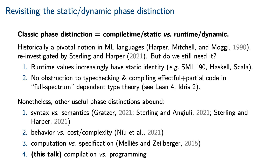On the other hand, we have found that other useful phase distinctions abound. For instance, logical relations and parametricity arguments evince a phase distinction between syntax and semantics. This observation lies at the heart of the recent proof of normalization for cubical type theory by myself and Carlo and Julie, and the recent proof of normalization for multimodal type theory by Gretzer. Bob Harper and I have also used this observation to give the most succinct proofs of representation independence for ML modules in the literature so far. There is also a phase distinction between program behavior and program complexity, which New, Grodin, Harper, and I have used to design a cost-sensitive logical framework that can reason about the cost and behavior of programs at the same time. Similarly, Melius and Seidelberger have shown that there is a phase distinction between computation and specification, reconstructing the semantic aspects of type refinements. And in this talk, we are considering a phase distinction between compilation and programming.